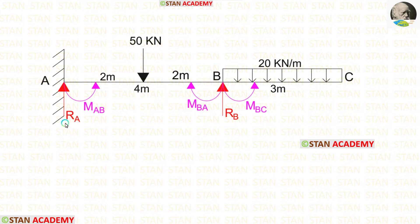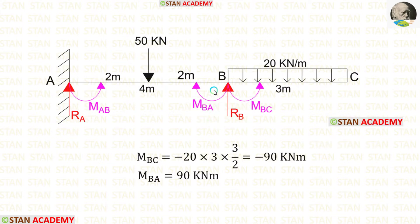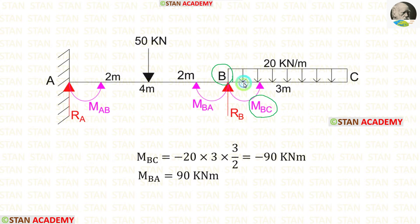We also have to find two vertical reactions, RA and RB. At joint B, we can easily calculate both of the moments. To calculate MBC, we have to calculate the moment at point B from point C.